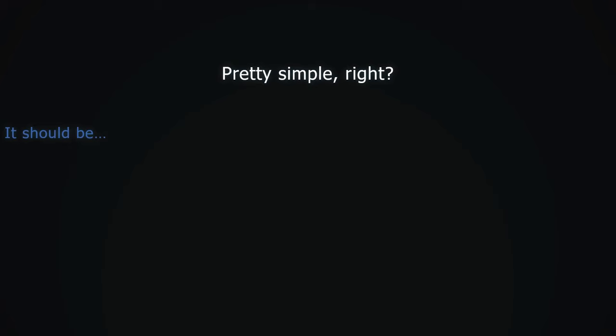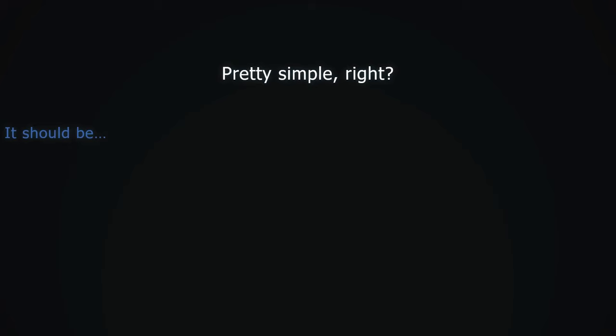It should be, but it is mostly taught in a way that introduces a new formula with factorials, and everything is proven using it. This makes us forget the true, simple meaning of n choose k, which represents the number of ways to choose k objects from n available.